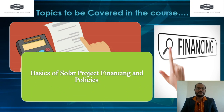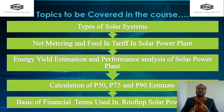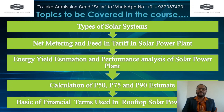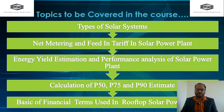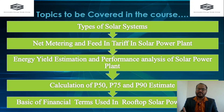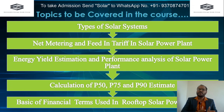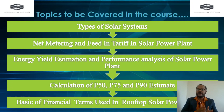The second component of this course covers the basics of solar project financing and policies. We'll talk about types of solar systems, what net metering and feed-in tariff processes are, and the policies for net metering and feed-in tariff in various states. We'll also cover energy yield estimation, performance ratio calculation, and probability exceedance parameters — specifically the P50, P75, and P90 estimates used when approaching a bank for a loan on a solar project.